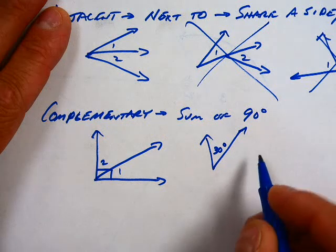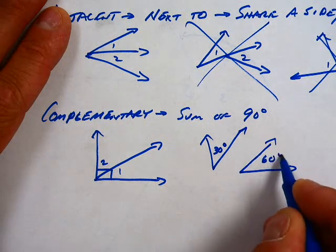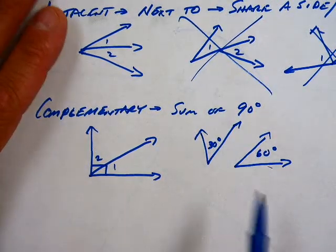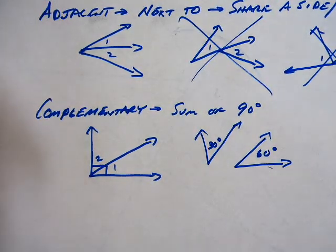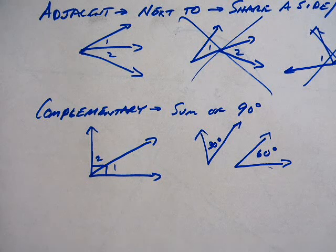Complementary angles, on the other hand, do not have to be adjacent. We could have an angle over here that's 30 degrees, and we have an angle over here that's 60 degrees. Are these complementary? Yes.